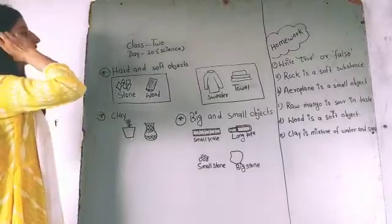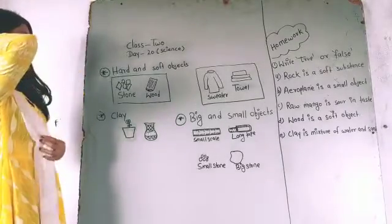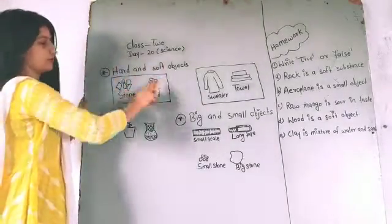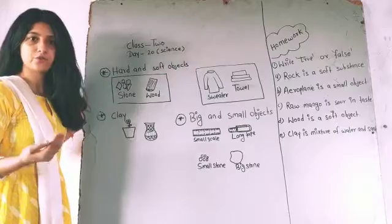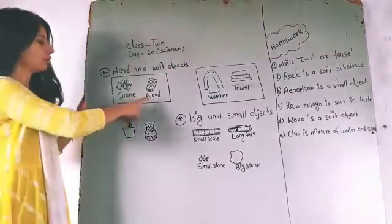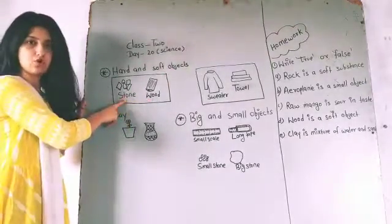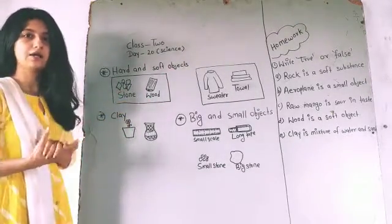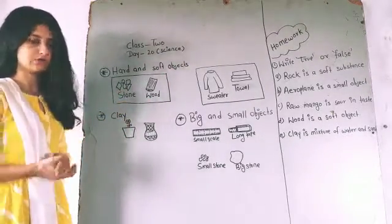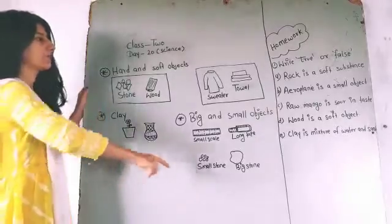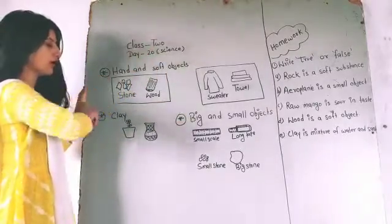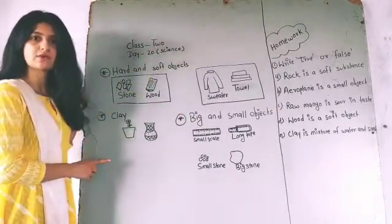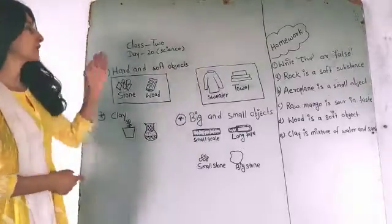Starting from hard and soft objects — those objects which are made from wood, stone, iron, etc. are hard objects. So here we have a marble board; it is made from wood, so it is a hard object.